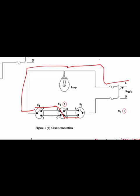When S1 is at position one and S2 is at position four in the cross connection, path goes one to A, A to D, D to four — closed path, lamp will glow. So in the cross connection, between one and four the lamp glows, and between two and three the lamp glows. For the remaining combinations — one and three, and two and four — the circuit is open and the lamp will not glow. Totally we have eight possible combinations with three switches S1, S2, and S3.